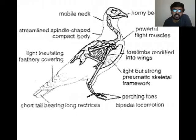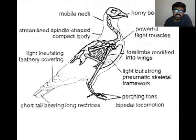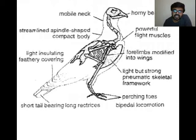Looking at the integument or skin, it is loosely attached to the body so that the flight muscles can move freely. The hind limbs are generally made for perching — when a bird sits on a branch, that is called perching. The hind limbs have flexor tendons; when a bird sits on a branch, these flexor tendons get stretched, putting exertion on the toes, causing the toes to automatically bend toward the branch. This perching mechanism helps the bird sit on a branch without fear of falling.